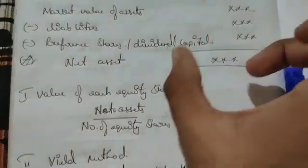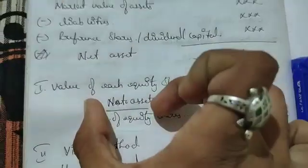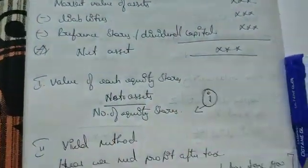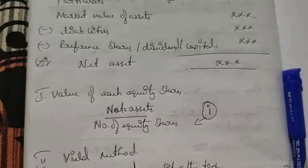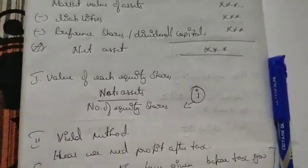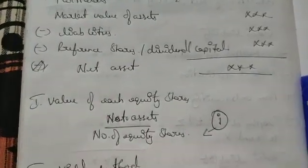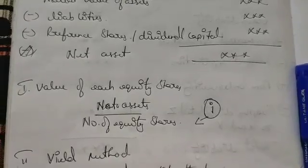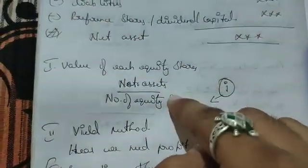You will take this amount here - net asset - then number of equity shares. You have to take the number of equity shares, not the amount, take the quantity. By dividing this you will get net asset method. That is done.